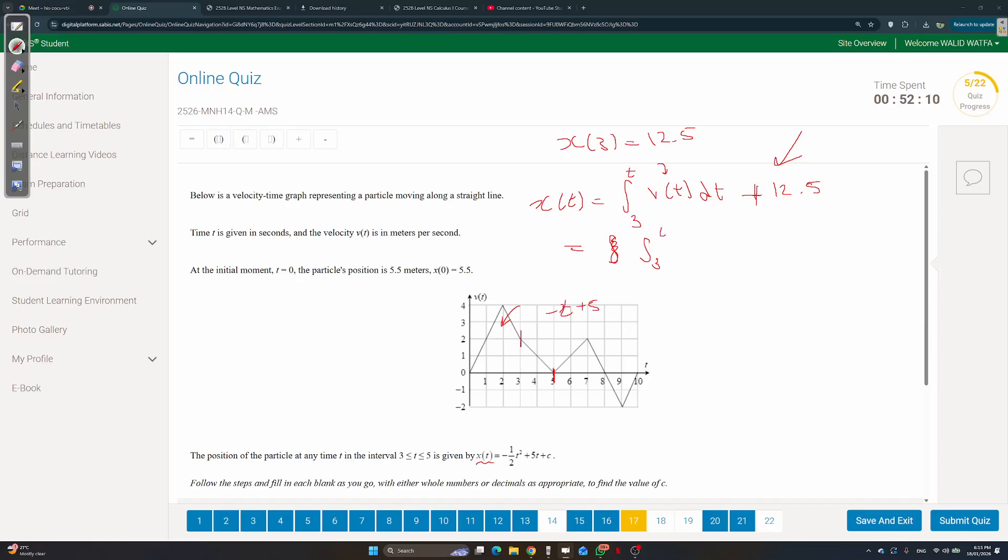So it's going to be integral from 3 to t, V of t, we said it's negative t plus 5, dt. Now outside the integral you have the 12.5. Now, integral of negative t plus 5, any person in grade 12 should be able to do it, whether you're in standard or advanced.